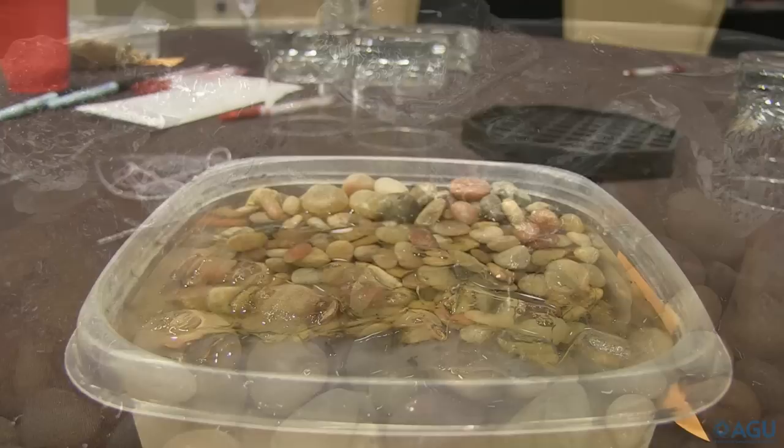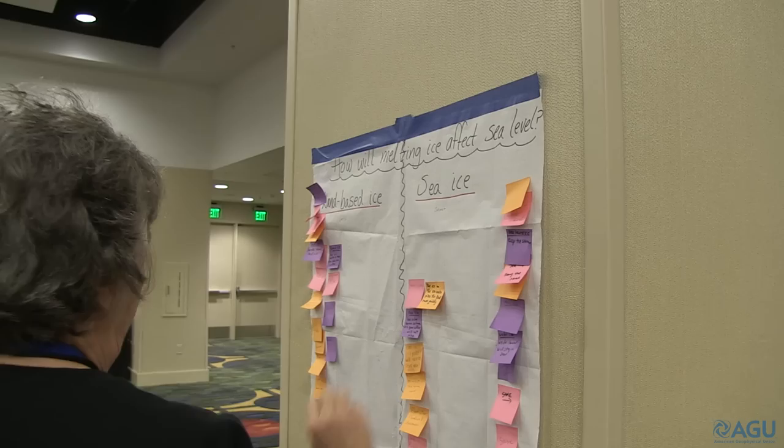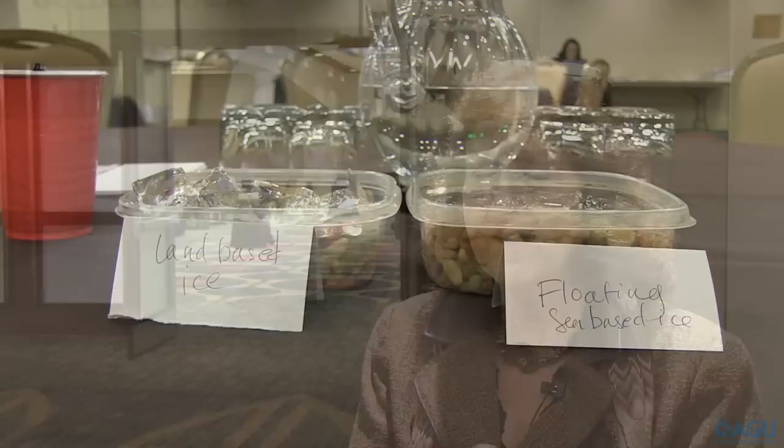They mark the water level after the ice is in, let it melt, and make a prediction: will land-based ice raise sea level if it all melts? So all the ice in Antarctica, all the ice on Greenland — if that melts and flows into the ocean, will the ocean levels rise?